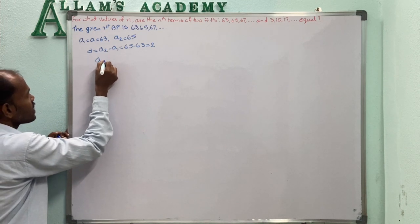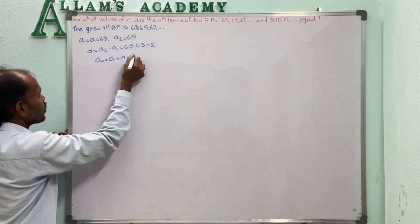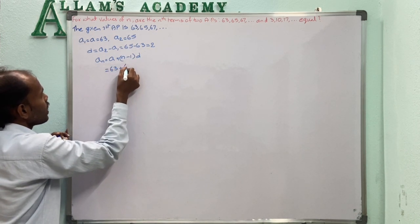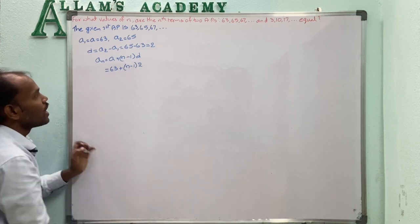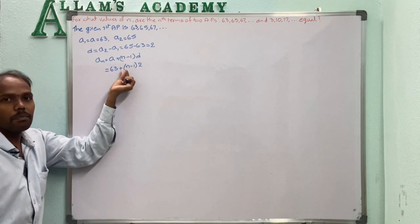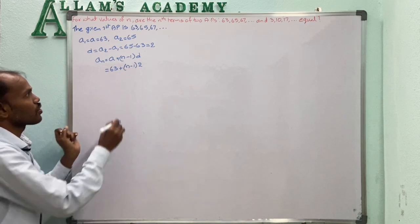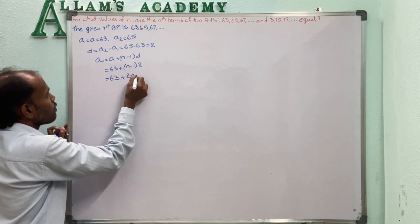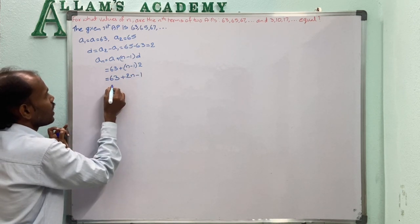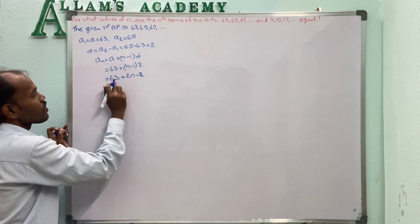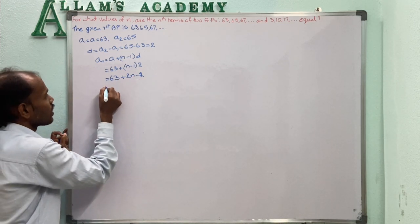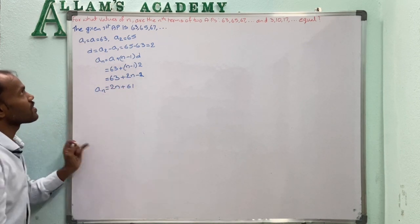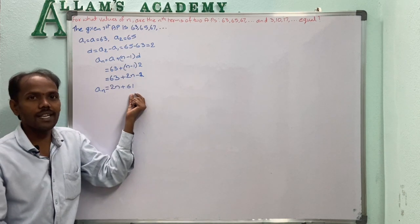The general term AN equals A + (N-1)D. With A = 63 and D = 2: AN = 63 + (N-1) × 2 = 63 + 2N - 2 = 2N + 61. The Nth term of the first series is 2N + 61.